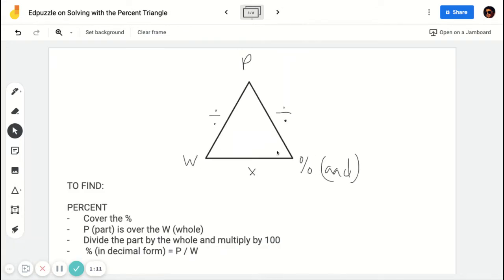And then finally if you're looking for the percent, you would do the part divided by the whole and that would give you the percent, but that would give you the percent as a decimal. So you end up having to multiply it by 100 or moving it two places to the right to get your final answer.